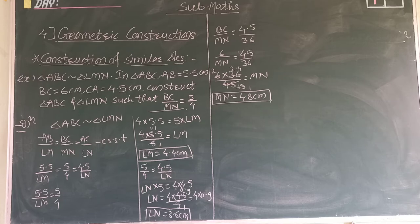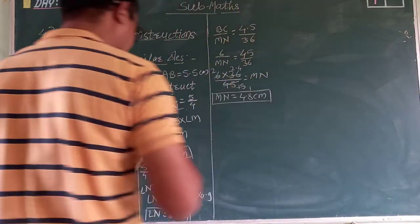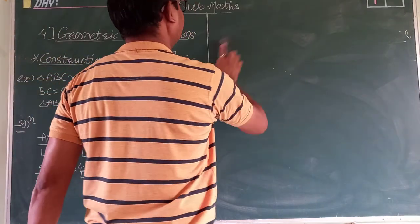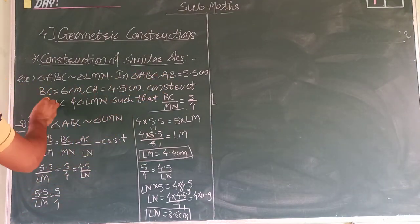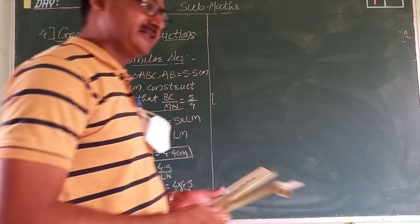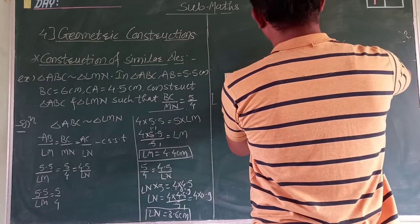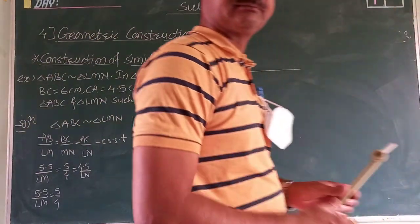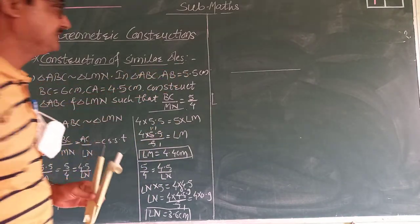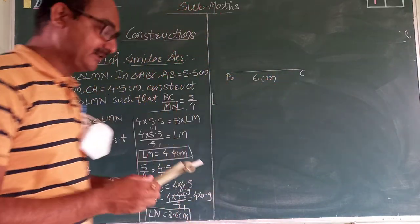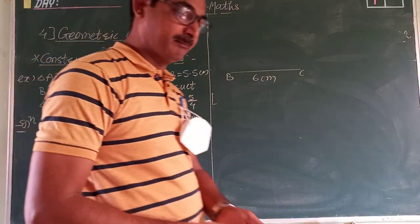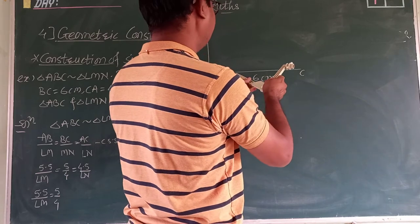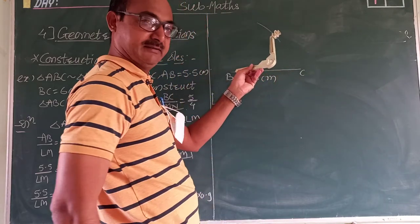The construction steps are straightforward. First, construct triangle ABC — all sides AB, BC, and AC are given. Take BC as the base, six centimeters — draw a line segment of six centimeters using a scale. Then take the compass and set the distance to AB, which is 5.5 centimeters. Using the scale and compass, take 5.5 centimeter distance and draw an arc from point B.